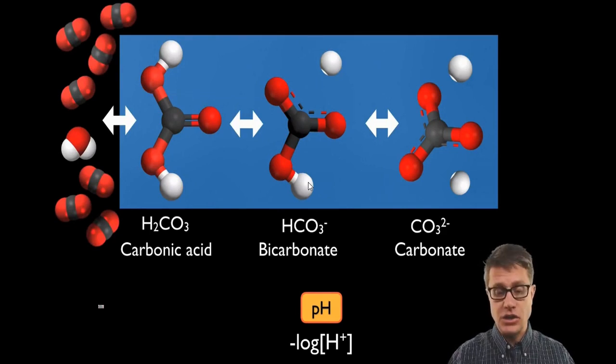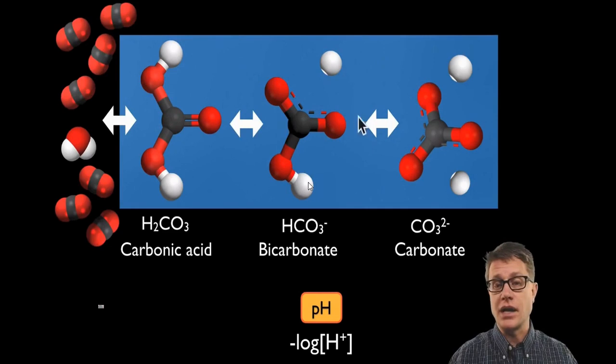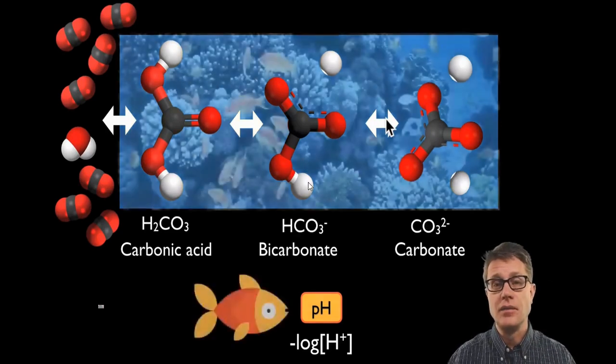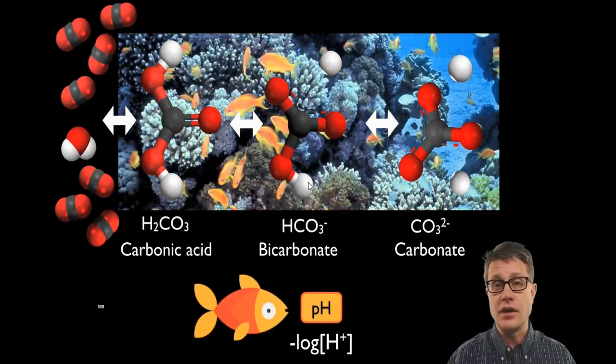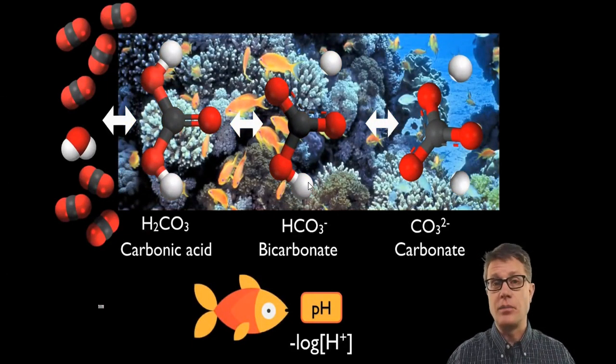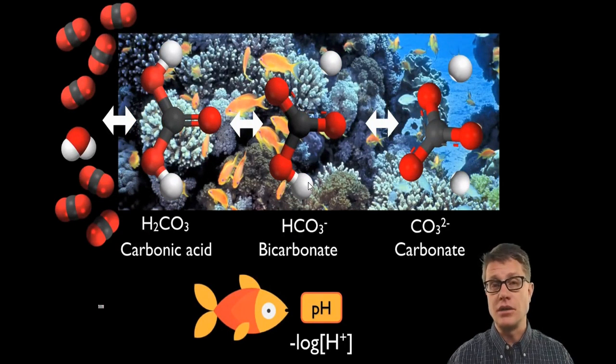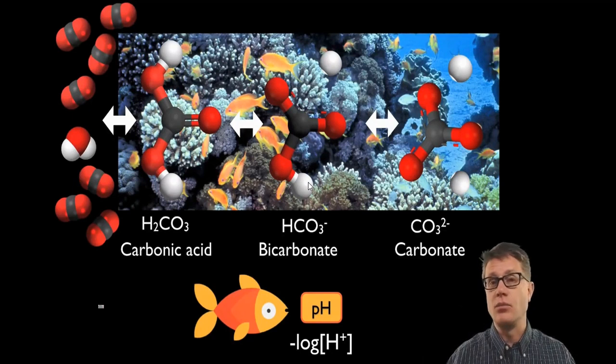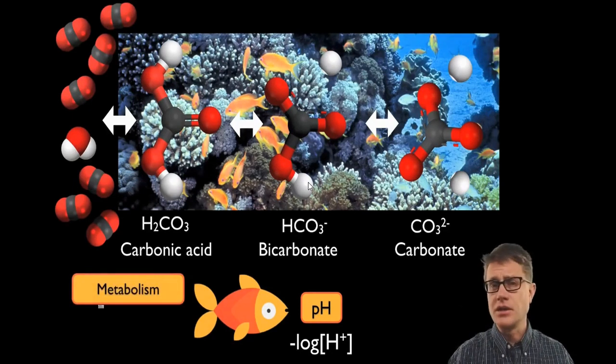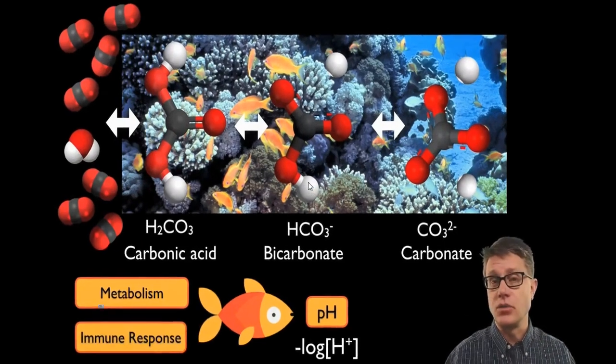Now, the levels of each of these can change. Each of these are reversible reactions, so depending on the amount of carbon dioxide, it can move towards the left or it can move towards the right. Why is this a big deal? Well, life exists in this water, and life is regulated by proteins, and proteins require a specific pH. The studies are showing that if we decrease the pH, it might get more acidic. Organisms are having a decrease in metabolism, and they can have a decrease in their immune response as well.